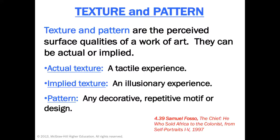Texture and pattern are perceived qualities of a work of art. They can be actual or implied. Actual texture is like when you pet a cat, or a cactus — if you were to touch it, which I don't recommend, it would be very prickly. That's an actual texture. Actual texture occurs primarily in three-dimensional work, in sculpture.